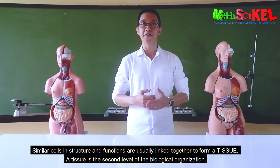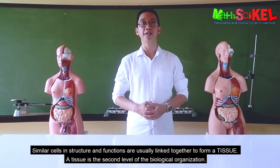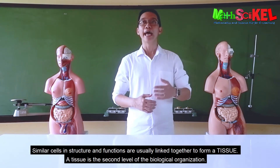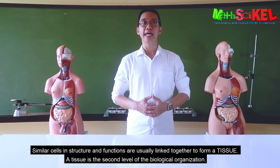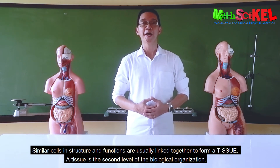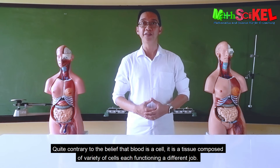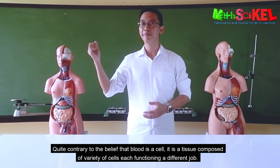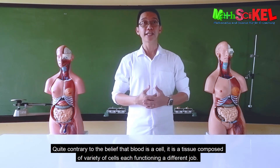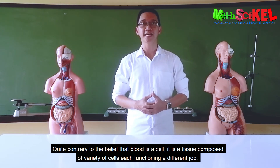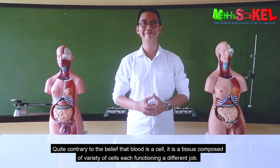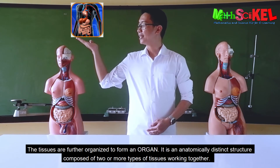Similar cells in structure and function are usually linked together to form a tissue. A tissue is the second level of biological organization. Quite contrary to the belief that blood is a cell, it is actually a tissue composed of a variety of cells, each functioning at a different job.